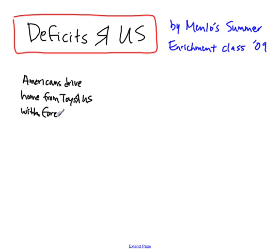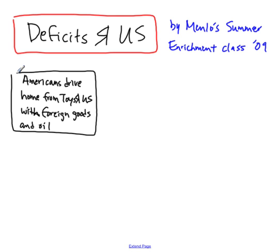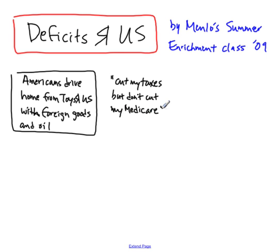America also borrows so it can spend more than it has. This is because American taxpayers in general prefer to keep taxes low but conserve costly government programs that provide the benefits. As a result, the United States government is borrowing, which drives up interest rates. And we also have a trade deficit.